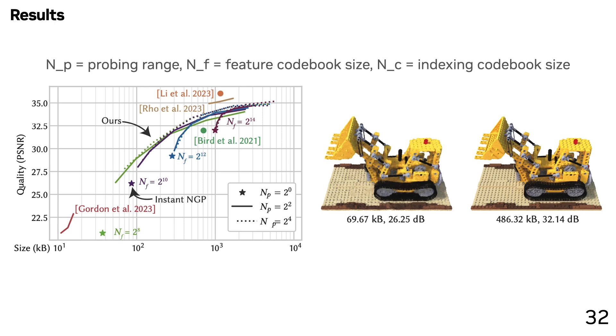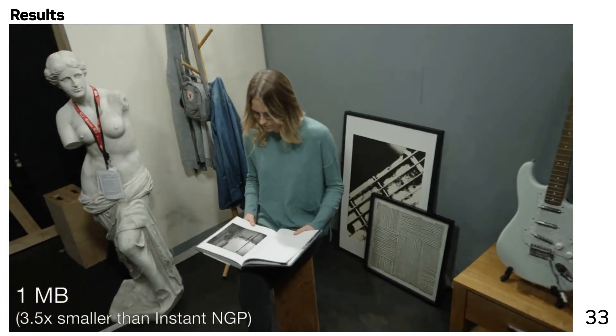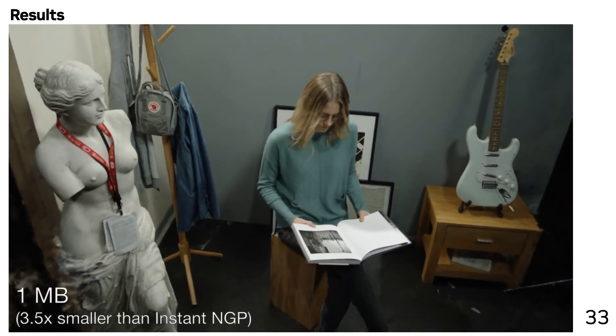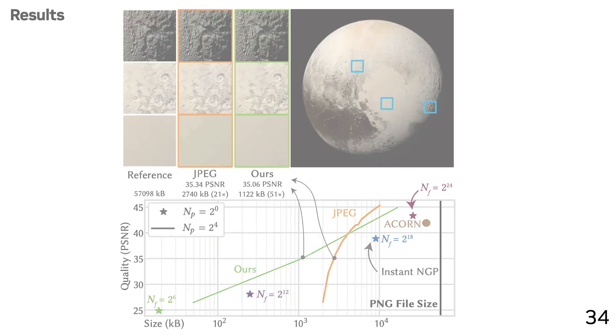Here's some results on the NeRF Blender scenes. We see that we don't actually beat some transform-based methods like WaveletNeRF, but these methods are very slow in terms of both training and inference compared to our method. Here's an eye candy result showing our representation at 1 megabyte. We actually even see that we are able to beat JPEG for large megapixel images by pretty significant margins for small sizes. We also handily beat other neural methods like ACORN.